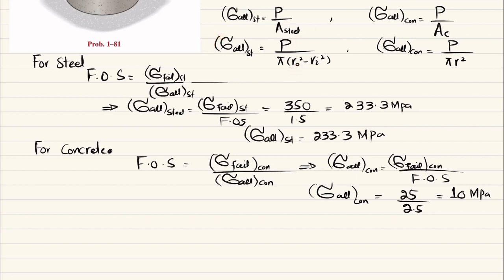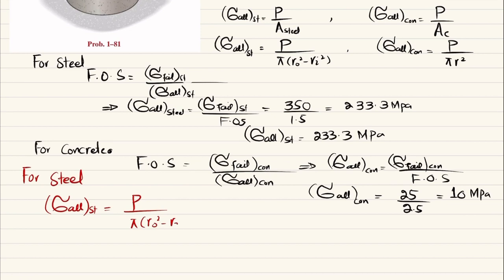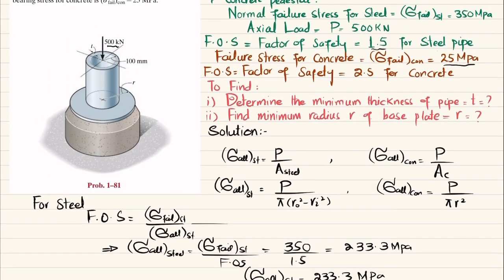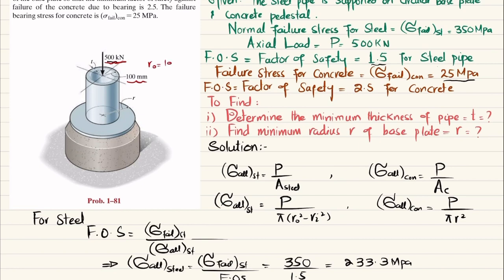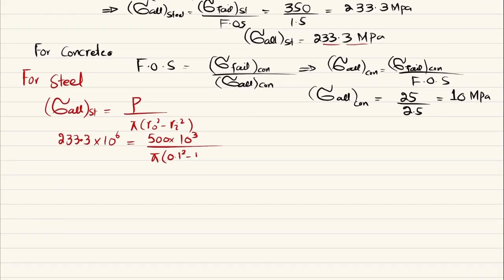Now for steel: the allowable normal stress is 233.3 × 10⁶ Pa, and this equals P divided by the pipe area. P is 500 kN, or 500 × 10³ N. The outer radius r_outer is 100 mm = 0.1 m. So we have 233.3 × 10⁶ = 500 × 10³ divided by π(0.1² − r_i²), where r_i is unknown.